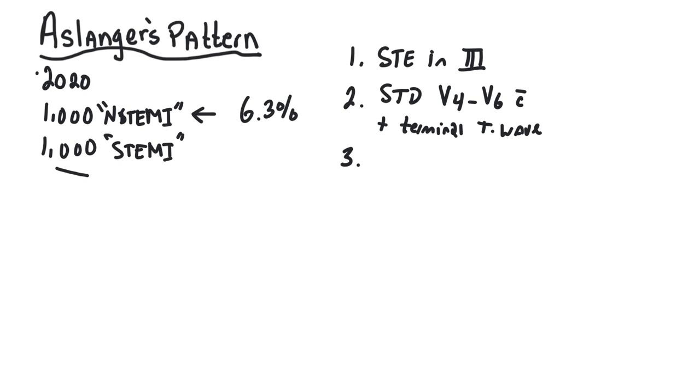And then the third finding was subtle, typically, from what I can tell, subtle ST elevation in V1 that exceeds any of the ST segment changes that would be seen in V2. So these are the three primary findings. And these were seen about 6.3% of the time in patients with in-STEMI.